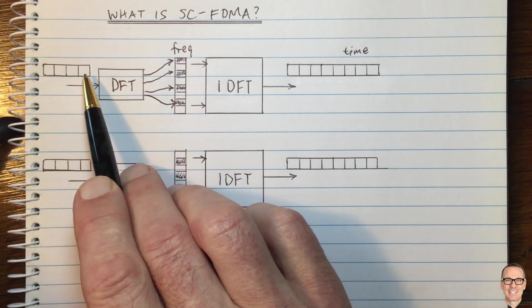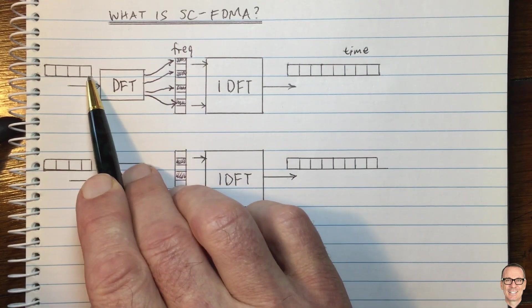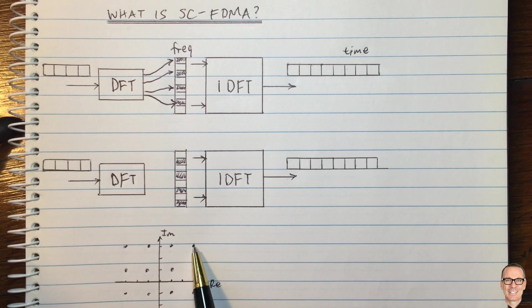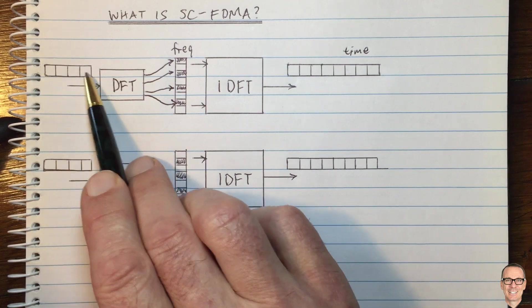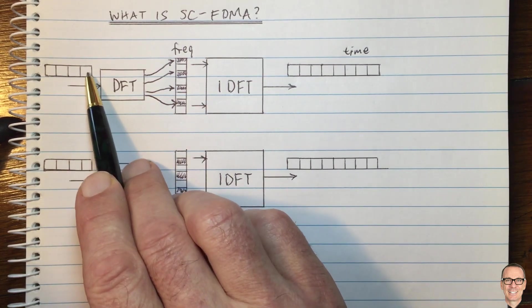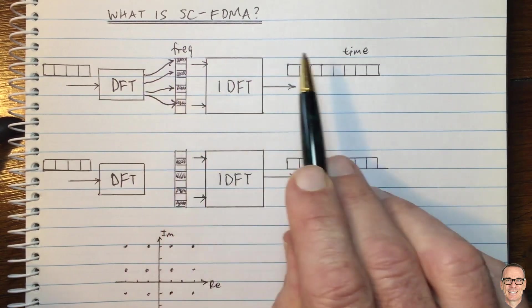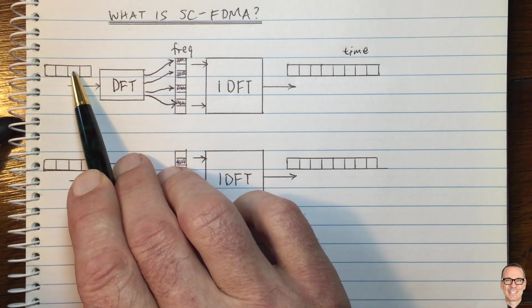Now, what we achieve by doing this is that this sequence will have a bounded peak to average ratio because we're putting constellation points into this sequence. This sequence is in the time domain. We go into the frequency and we go back to the time. It's definitely in the time domain.